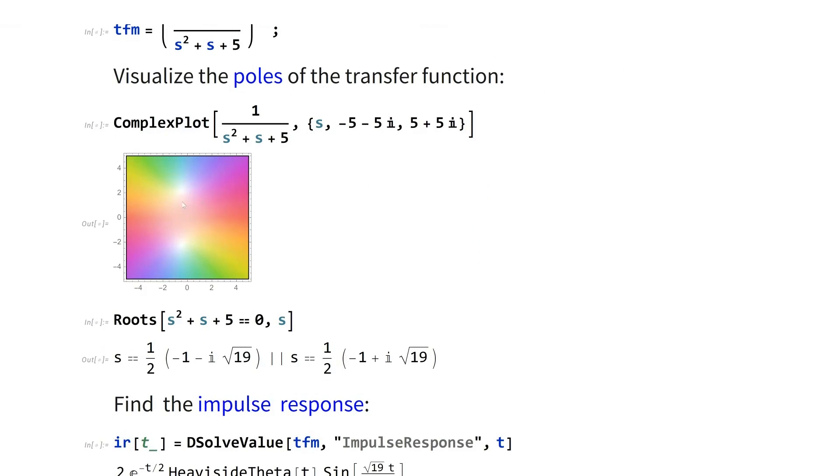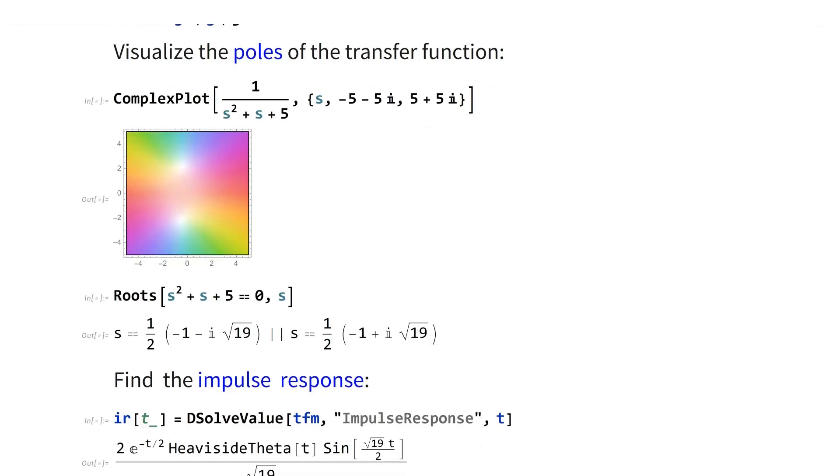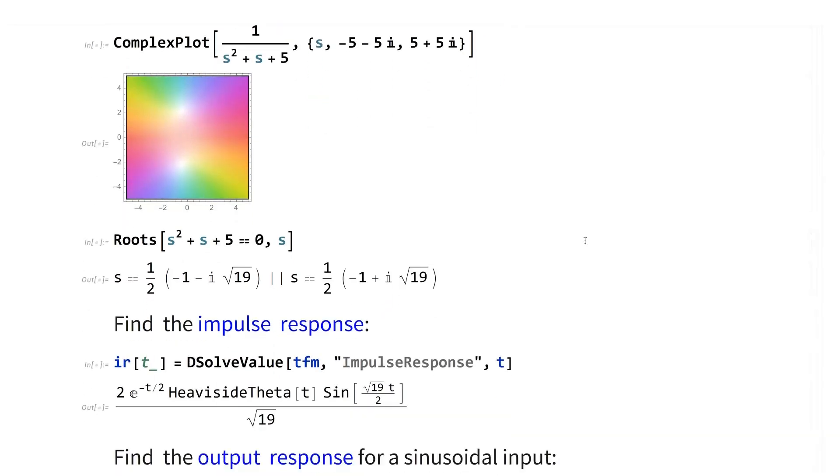And they're both slightly to the left of the y-axis, and they're both placed symmetric about the x-axis. So these are the two roots. And if you know your Laplace transform really well, then that tells you that the system is going to have a combination of oscillatory behavior and exponentially decaying behavior.